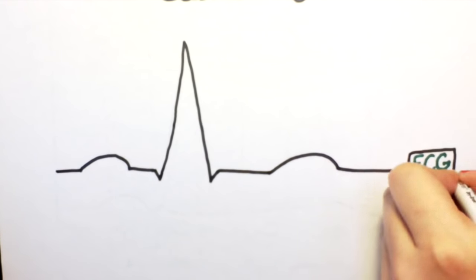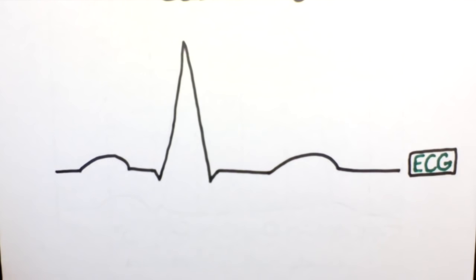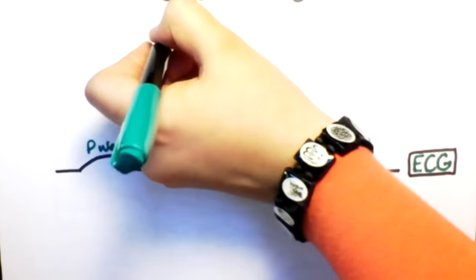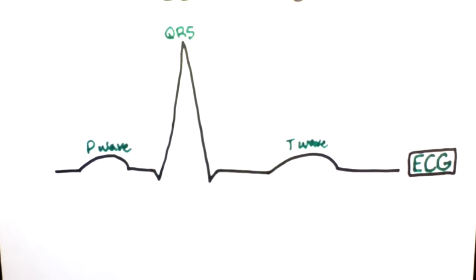Today we're going to continue our discussion of the cardiac cycle. The first thing that we're going to take a look at is called the ECG, or the electrocardiogram.